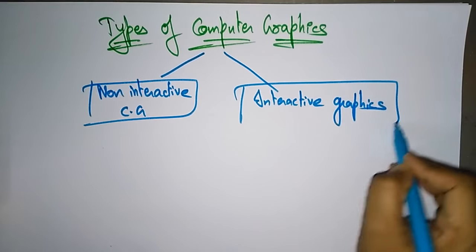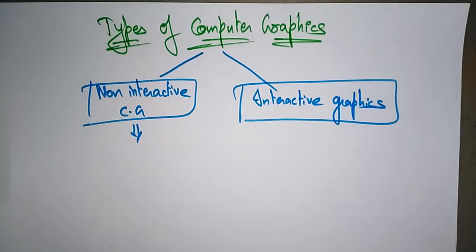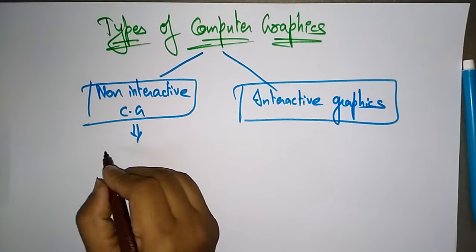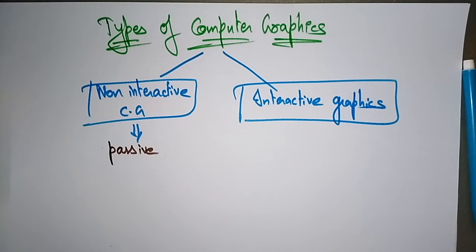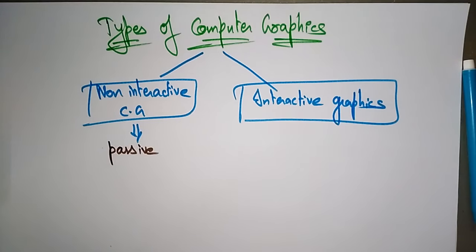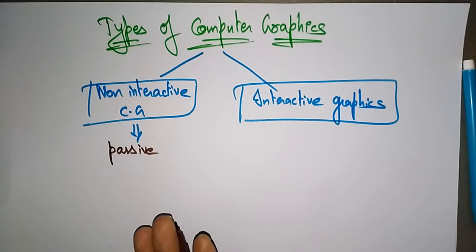Non-interactive computer graphics — what do we mean by non-interactive? Non-interactive is passive, not active. Active means a communication has to be established. Suppose we both are talking — there is an active response. But once I send a message to you and you view it later, that is passive, that is non-interactive.